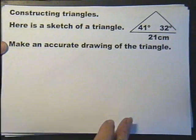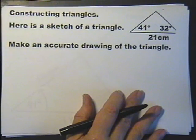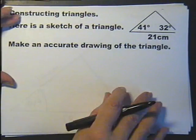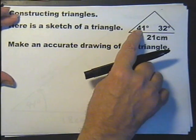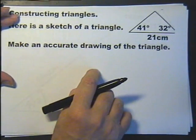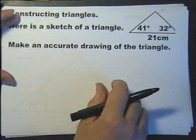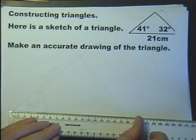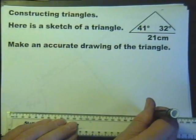And the last one, because that's all we're going to do on this little lesson. Here's a sketch of a triangle, that's 21 centimeters. There's 41 at that end and there's 32 at that. And make an accurate drawing. So let's measure the 21 centimeters, which is there.